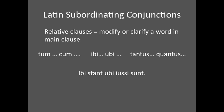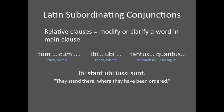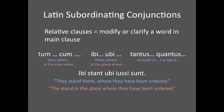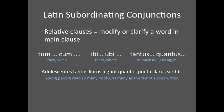For example, ibi stant ubi iussi sunt — 'They stand there where they have been ordered to stand.' This may sound a little odd in English, so you could adjust the translation to 'They stand in the place where they have been ordered.' You will almost always have to adjust tantus...quantus sentences so that they sound better in English. For example, iuvenes tantum libros legunt quantum poeta clarus scribit — literally 'Young people read so many books, as many as the famous poet writes,' but rephrased as 'Young people read as many books as the famous poet writes.' Often, subordinate clauses require us to adjust our translation to convey a specific idea or grammatical concept more clearly in English.